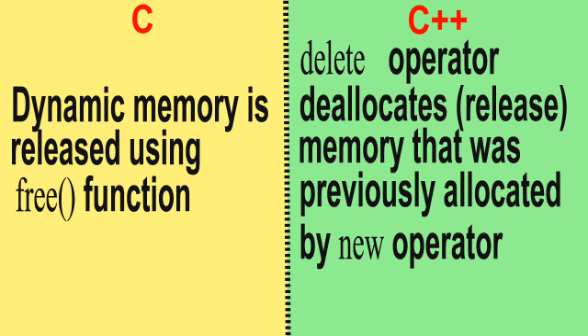In C, dynamic memory is released using the free function. The free function, as the name suggests, is used to free or deallocate memory blocks previously allocated using malloc function. In C++, the delete operator deallocates memory that was previously allocated by the new operator.